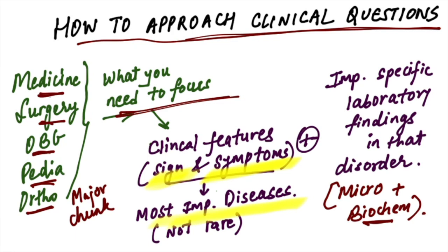In these subjects, what you need to focus on is the signs and symptoms and the most important diseases. You have already read the most common diseases that present in OPDs, not the rare ones — you don't need to focus on rare ones. Focus on the most important presenting diseases in the community, and within those diseases focus on signs, symptoms, and the most specific laboratory and radiological findings.